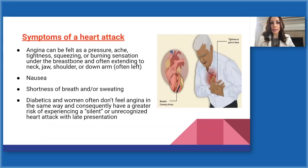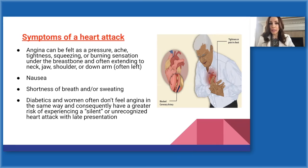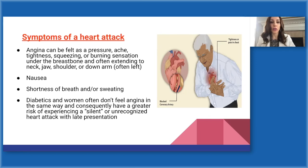Some symptoms of a heart attack can be different from person to person. The most classic symptoms of angina can be felt as a pressure — the elephant sitting on the chest — an ache, tightness, squeezing, or a burning sensation under the breastbone, often extending to the neck, jaw, shoulder, or down the left arm. This can be associated with nausea, shortness of breath, or sweating, or these symptoms may come on without chest pain. Diabetics and women don't feel angina the same way — they have a higher risk of a silent or unrecognized heart attack, because diabetics develop nerve-related damage from chronic high blood sugar, dulling those sensations.